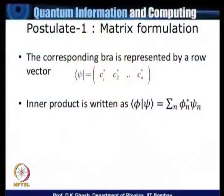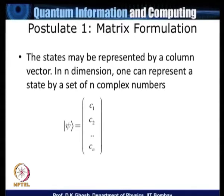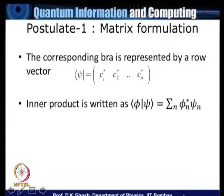So ket ψ is represented by a column vector with components c₁ up to cₙ. The dual space — the bra — corresponding to ψ is instead of a column vector a row vector, but the components of the row vector are the complex conjugates of the components of the ket vector. So instead of the column vector c₁, c₂, etc., the bra is given by c₁*, c₂*, as shown in the slide.